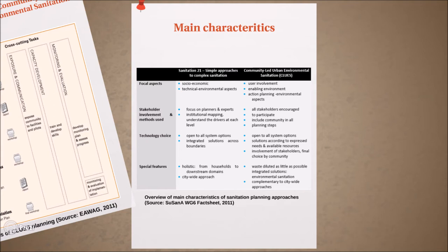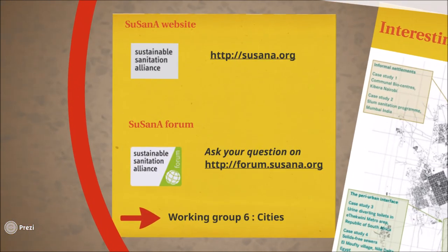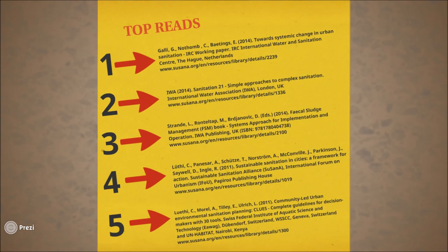CLUES, on the other hand, focuses on user involvement, motivation and environmental aspects for everybody who wants to participate. It is geared towards the community level and is meant to complement city-wide planning approaches like the Sanitation 21 framework. There are more interesting topics and information about urban sanitation that can be found on the SUSANA website. Visit www.susana.org for more reading and join the discussion on the SUSANA forum at forum.susana.org. For more information on urban sanitation and useful planning tools, read the resources available under working group 6 on the SUSANA website.